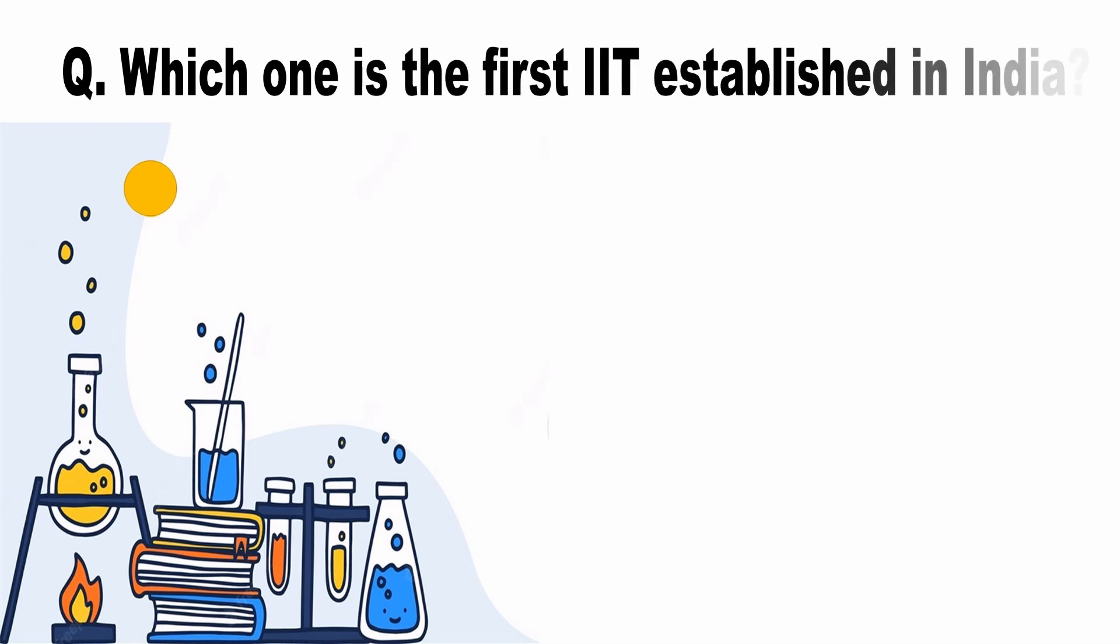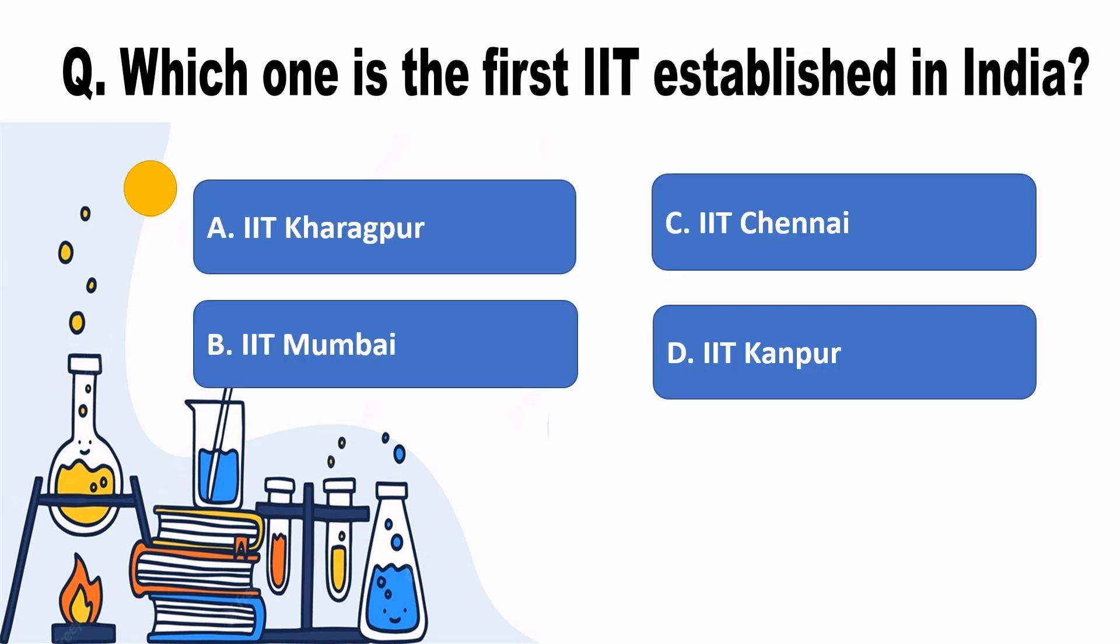Which one is the first IIT established in India? Answer A, IIT Kharagpur.